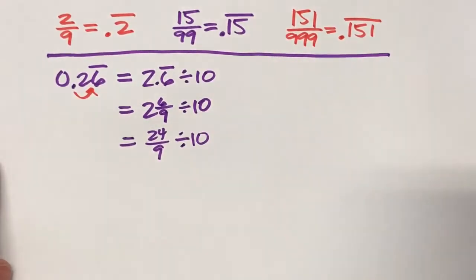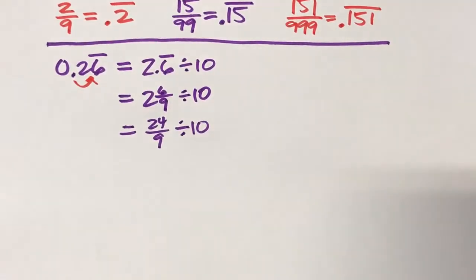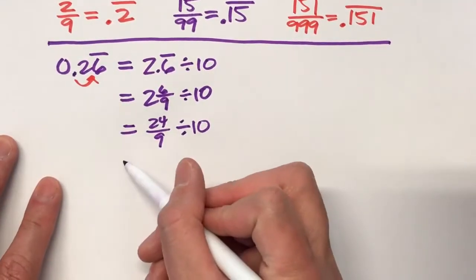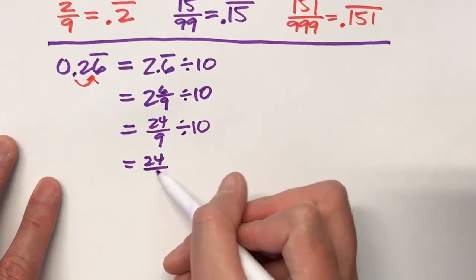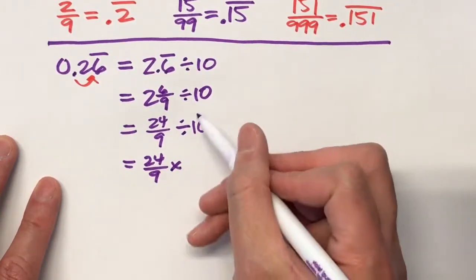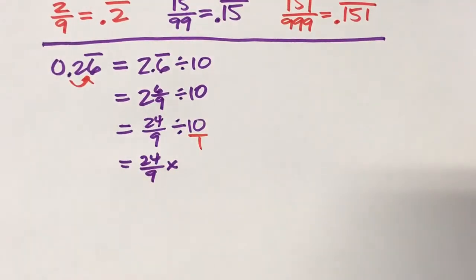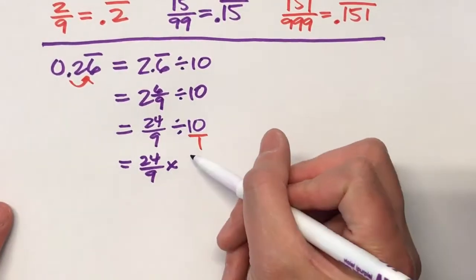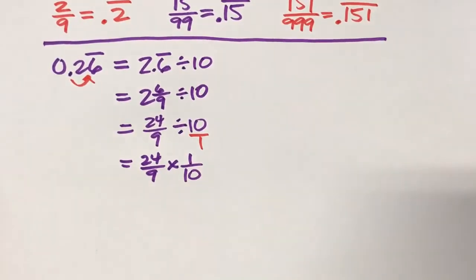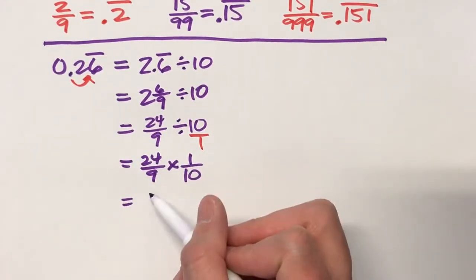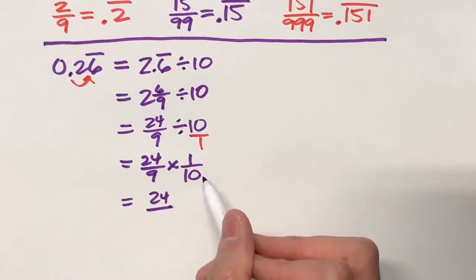Drop down to divide by 10. Now, when we divide fractions, we keep the first one the same and multiply the second one flipped over. Now this is really 10 over 1. So if I flip this over, this is times 1 tenth. So to get my answer, top times top, bottom times bottom.